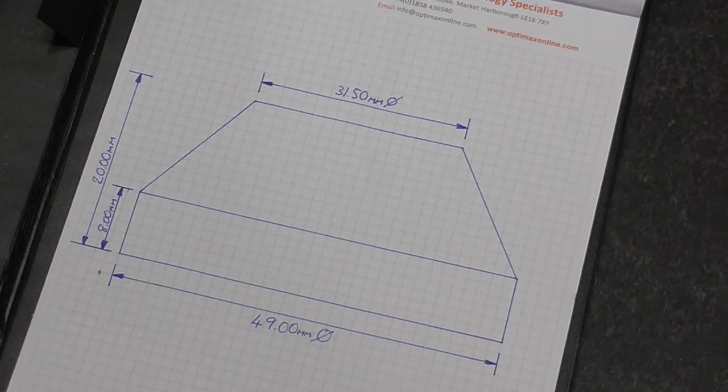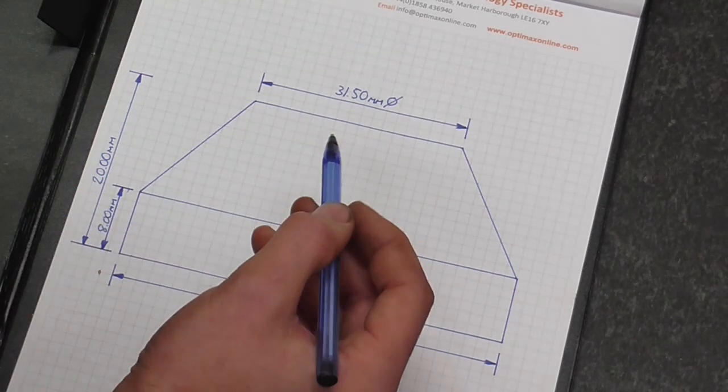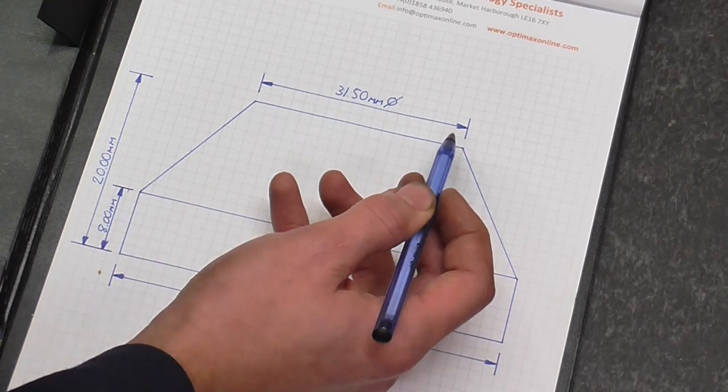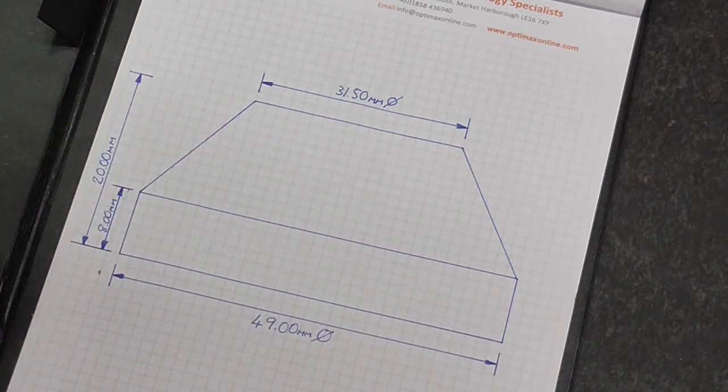Now first of all we're going to have a look at the drawing. We've got this 31 and a half showing the size of circle you should be left with on the end face, and that's handy, but I'm actually going to look at this a bit differently.